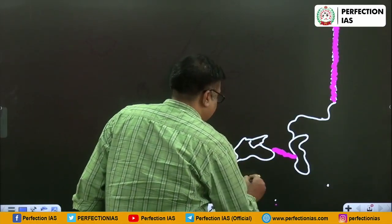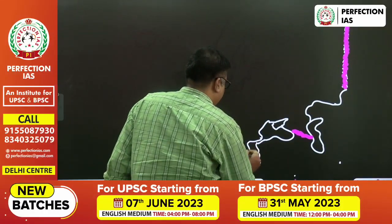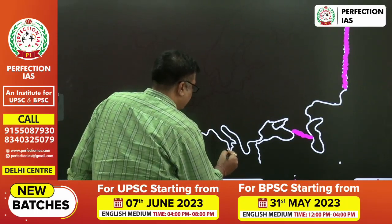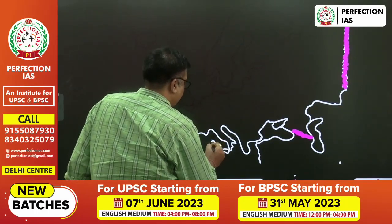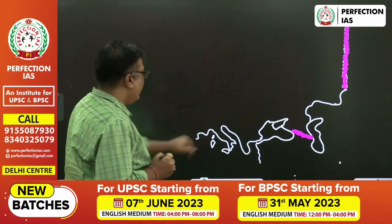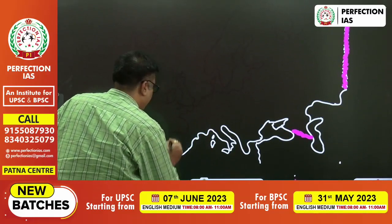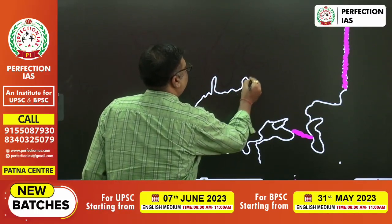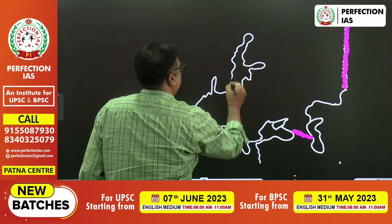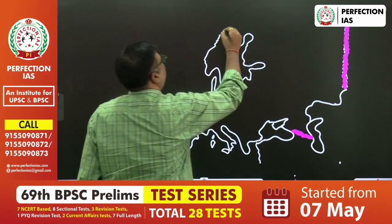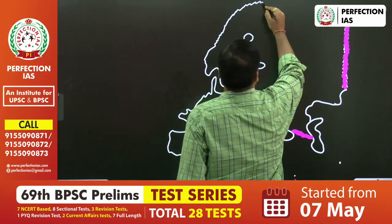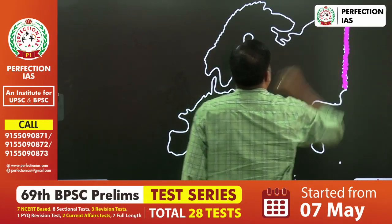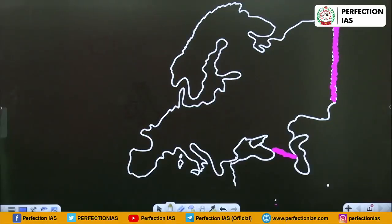Connect it now. The Adriatic Sea comes here, then the curve of Italy, then Sicily. Here are Corsica and Sardinia. Connect it upward - here is Norway. Move your hand lightly here because this coastline has an indented shape (fjords). Here is the Kola Peninsula, then just connect it.